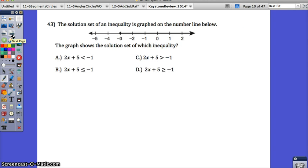43, the solution set of an inequality is graphed. The graph shows the solution set of which inequality. Okay, so you could solve all four and see what comes out to this. You also might want to write an inequality for this graph. So what does this graph represent?